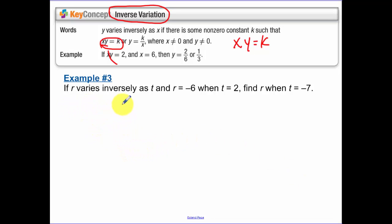So if r varies inversely as t, that means r equals k over t, or k equals r times t. Now since the constant of variation is the same for each one of our problems, we know that if r varies inversely as t and r equals negative 6 when t equals 2, we want to find r when t equals negative 7. So if I divide both sides by negative 7, r is going to be equal to 12 over 7.